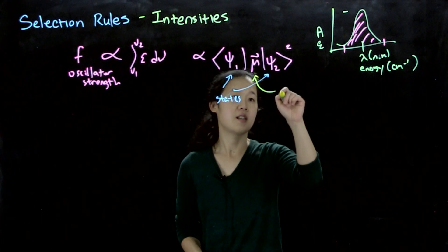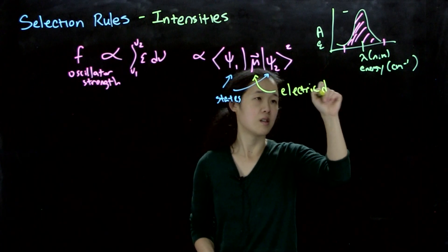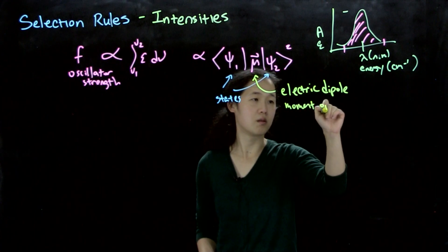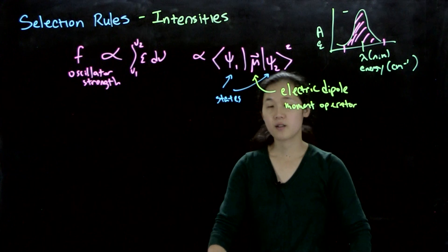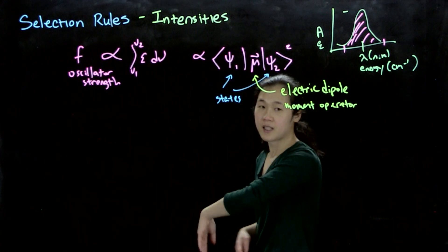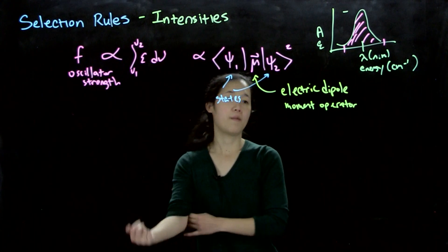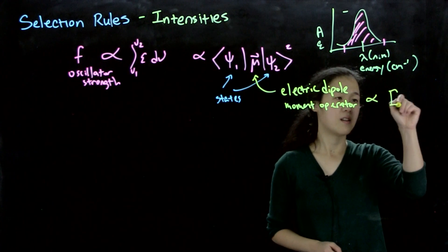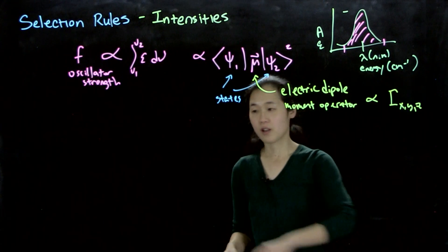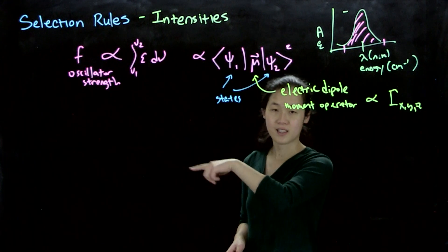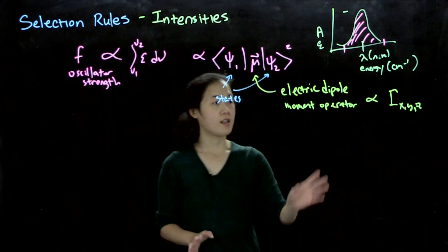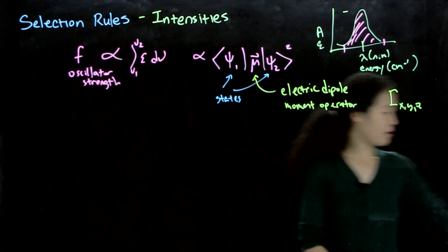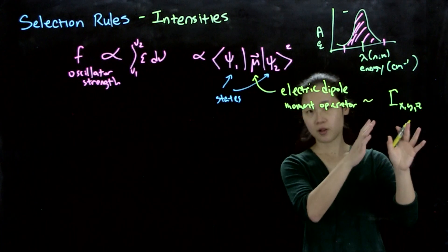The μ here is the electric dipole moment operator. This is related to how your light comes in as an electromagnetic wave — it oscillates and hits your molecule to excite it. The key point is that this operator transforms as Γ(x,y,z), because light is a wave that can oscillate in the z-axis, x-axis, or y-axis. So it has a linear function symmetry. This is the symmetry of the electric dipole moment operator.